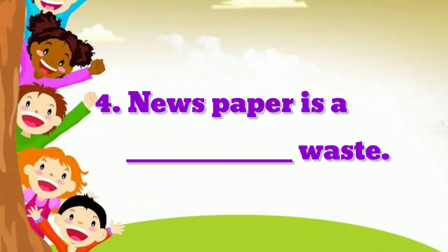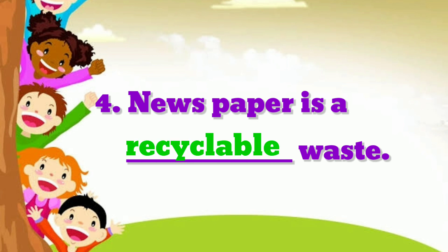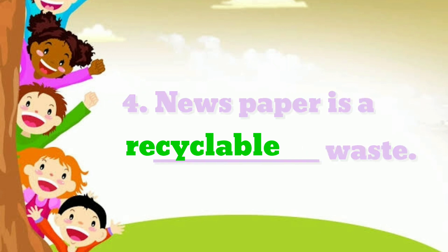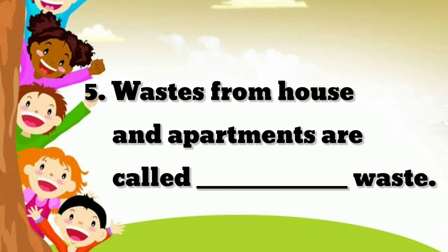Question number 4: newspaper is a dash waste. Yes children, newspaper is a recyclable waste. More examples for recyclable waste are glass, metals, and plastics — these are all recyclable waste. Question number 5: waste from houses and apartments are called dash waste. Yes, household waste.